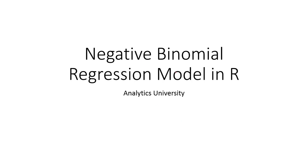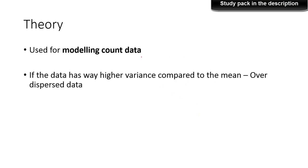We will see what negative binomial regression is and how to build a negative binomial regression model in R. Let's first understand the theory behind it. This is a type of regression model used to model count data. You may have seen another video on Poisson regression in this channel, which is also used to model count data. Negative binomial regression is similarly used to model count data.